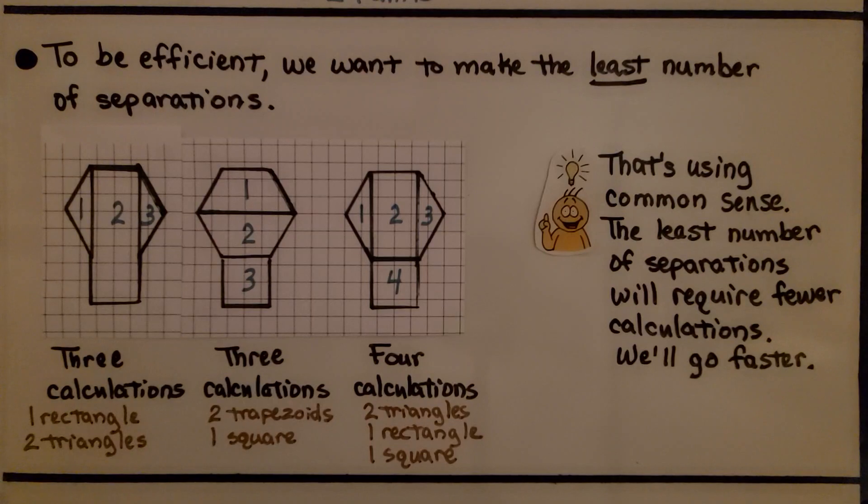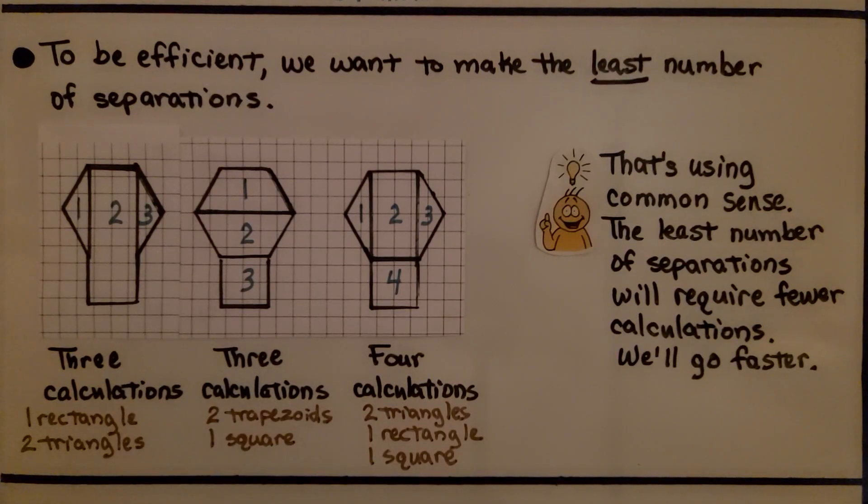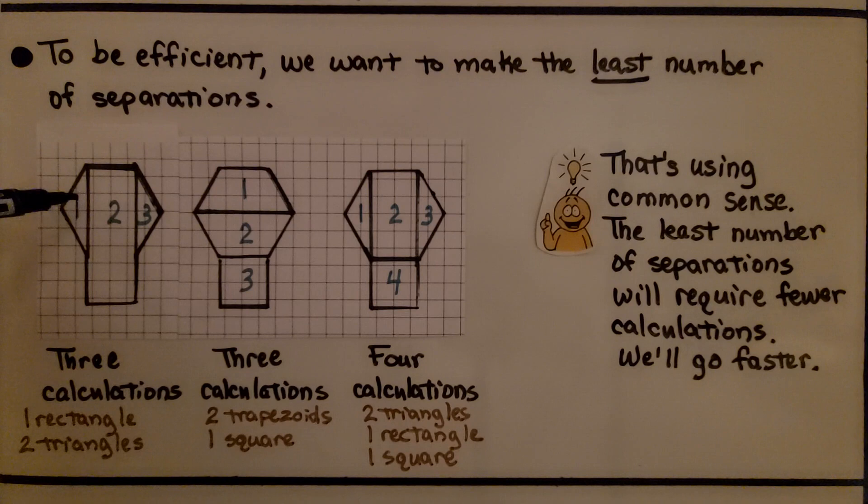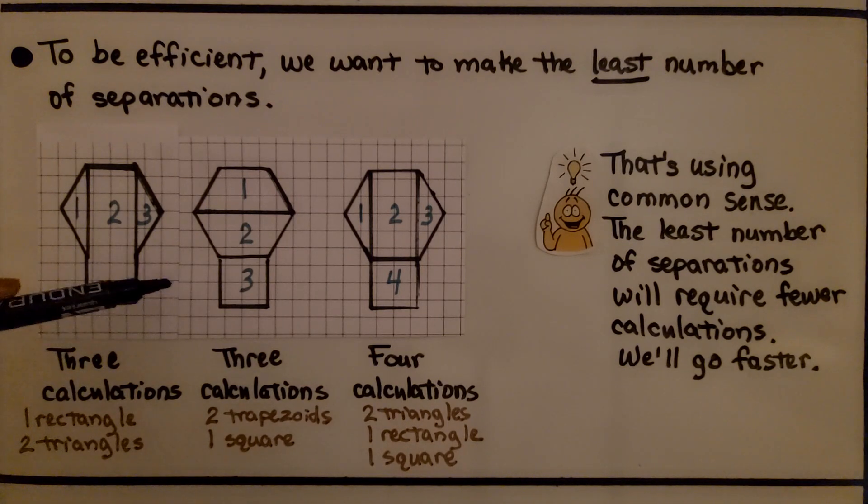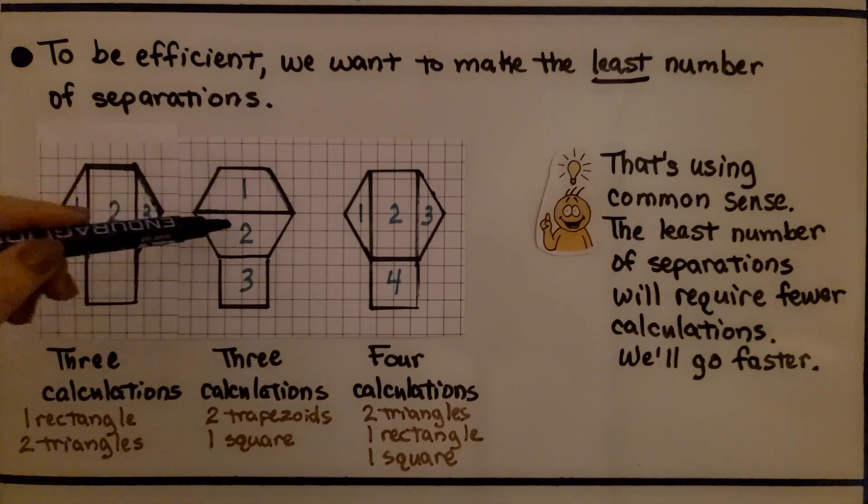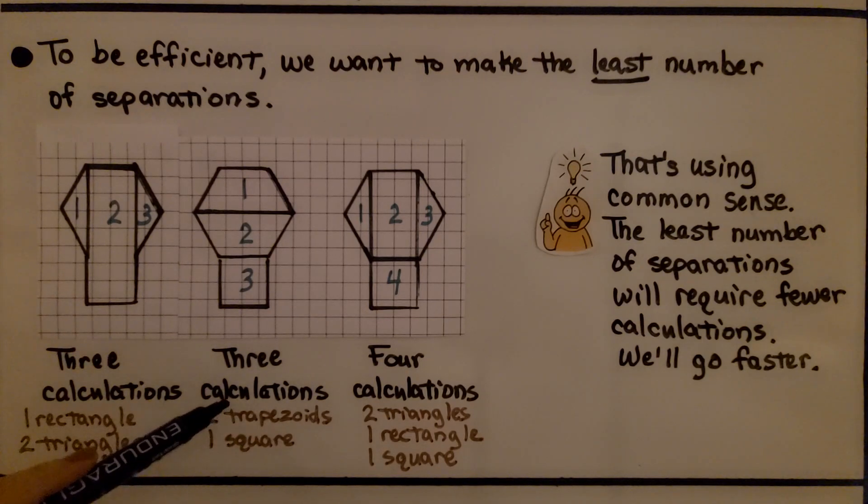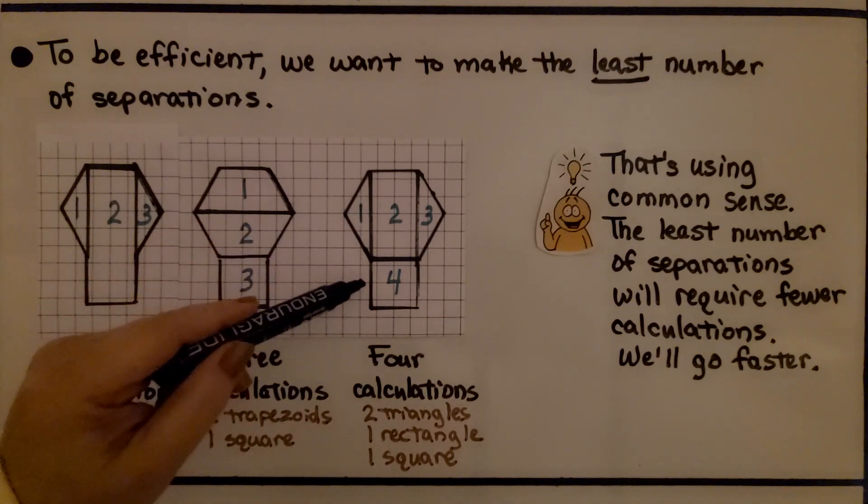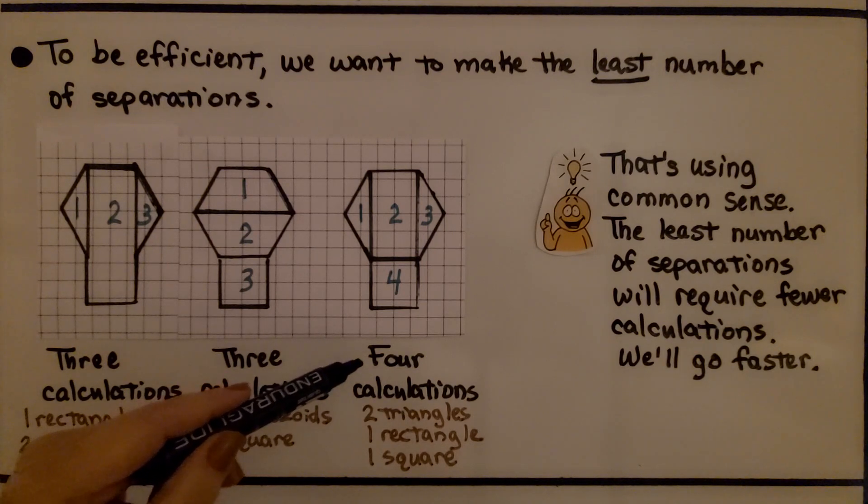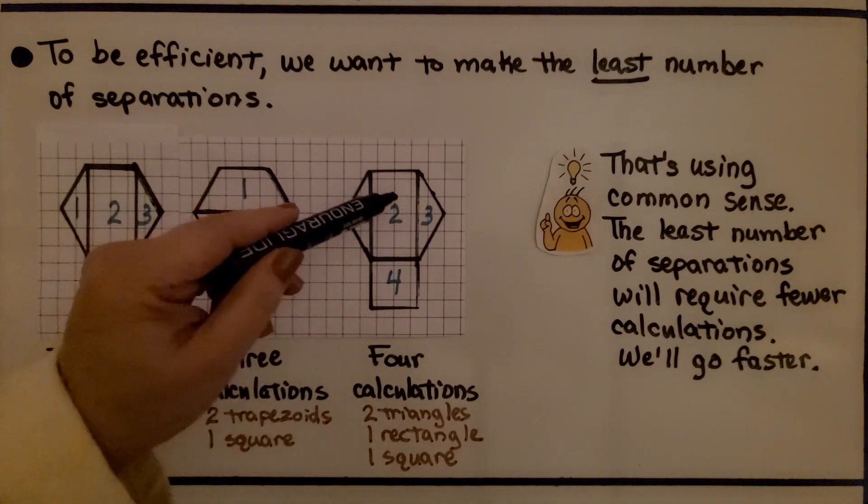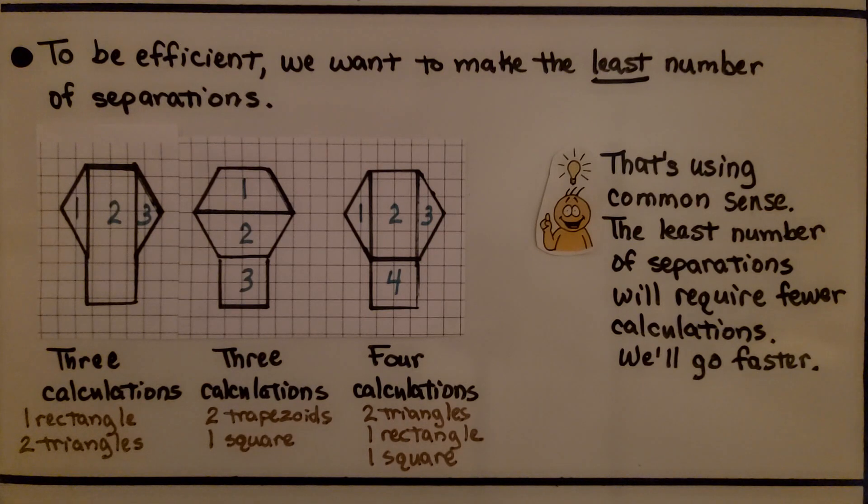To be efficient, we want to make the least number of separations. Here, we can look at this as one big rectangle and two triangles. That's three calculations. We can also look at it as two trapezoids and a square. That's three calculations. But look, if we split it up this way, we're going to have to do four calculations: two triangles, a rectangle, and a square. So using common sense, the least number of separations will require fewer calculations. Less math will go faster.